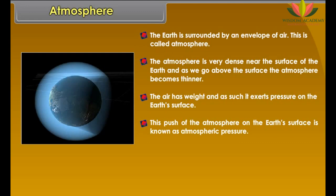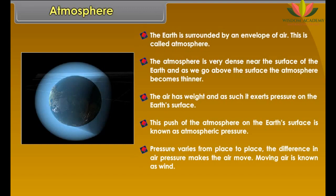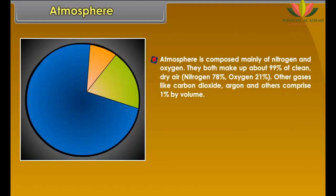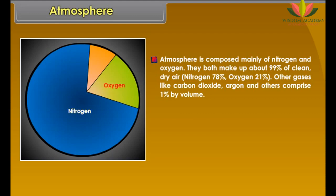Atmosphere. The earth is surrounded by an envelope of air called the atmosphere. The atmosphere is very dense near the surface of the earth, and as we go above the surface the atmosphere becomes thinner. The air has weight and as such it exerts pressure on the earth's surface. This push of the atmosphere on the earth's surface is known as atmospheric pressure.